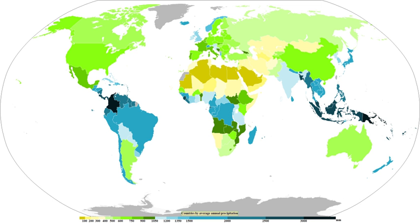The dew point is the temperature to which a parcel must be cooled in order to become saturated and condenses to water. Water vapor normally begins to condense on condensation nuclei such as dust, ice, and salt in order to form clouds. An elevated portion of a frontal zone forces broad areas of lift, which form cloud decks such as altostratus or cirrostratus. Stratus is a stable cloud deck which tends to form when a cool, stable air mass is trapped underneath a warm air mass.